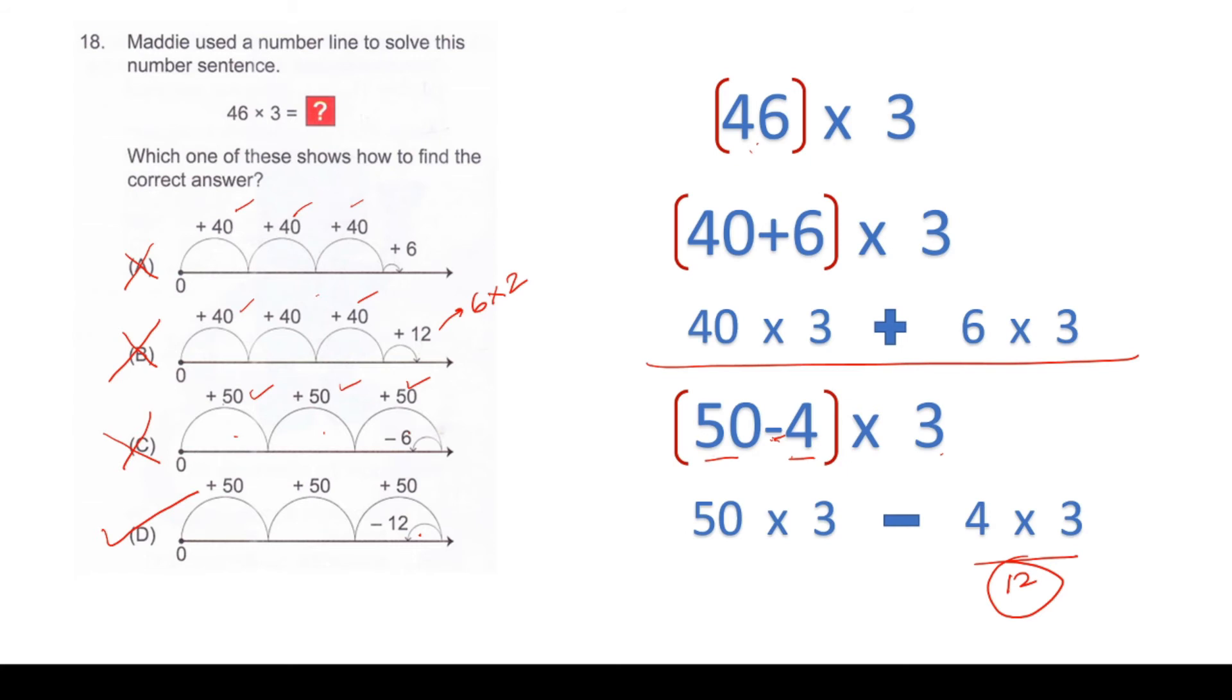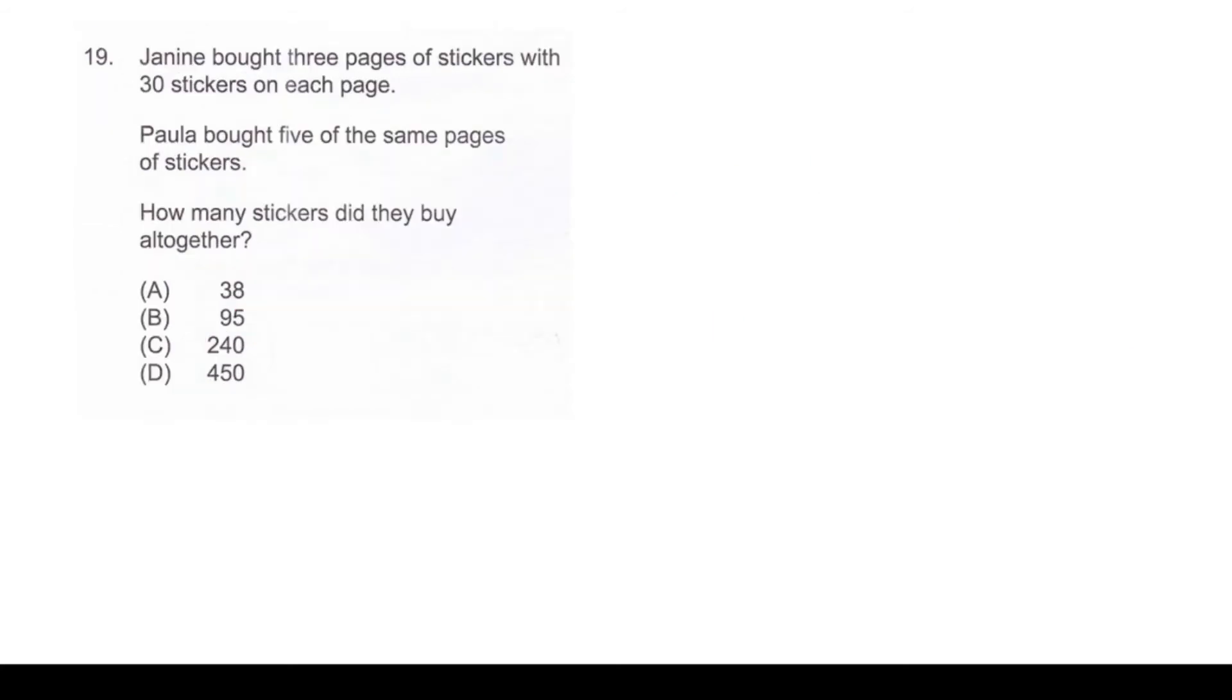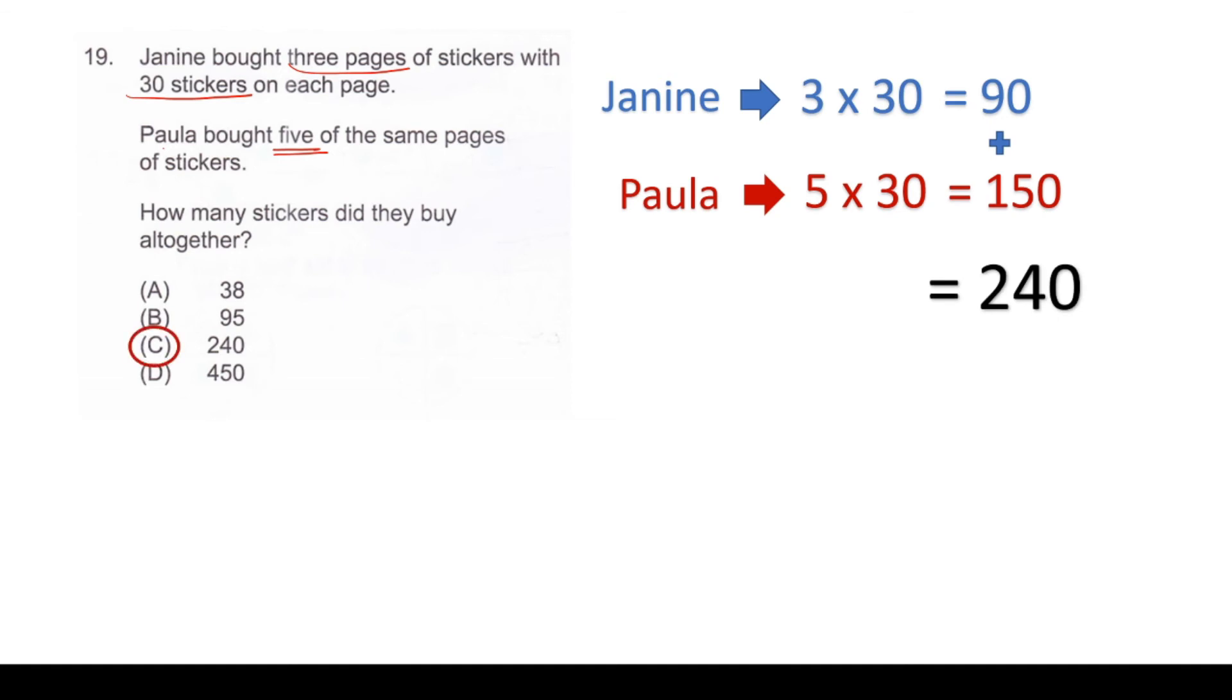Janie bought 3 packages of stickers with 30 stickers on each page. Paula bought 5 of the same pages of stickers. How many stickers did they buy all together? Janie has 3 times 30 stickers, which equals 90. Similarly, Paula has 5 times 30 stickers, which equals 150. We need to add them together, which gives us 240. Hence, our answer is option C.